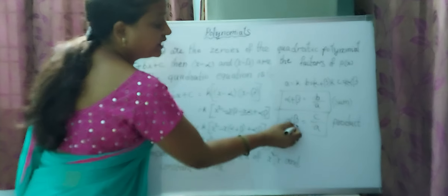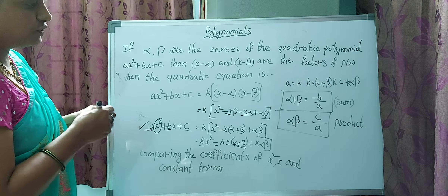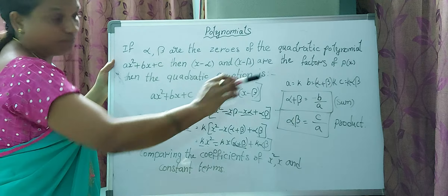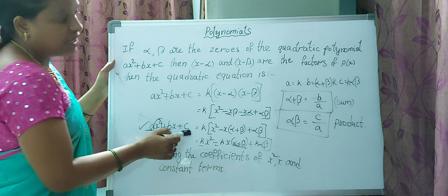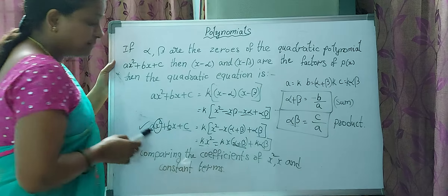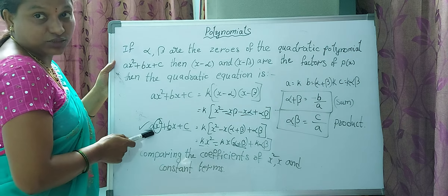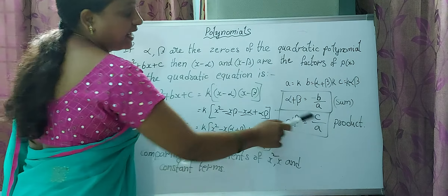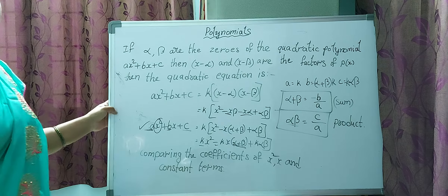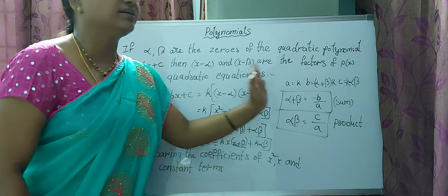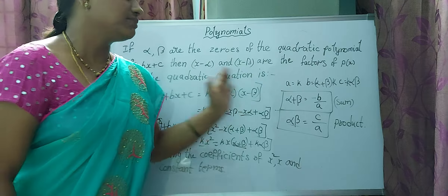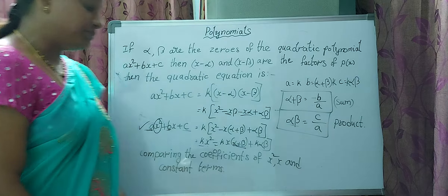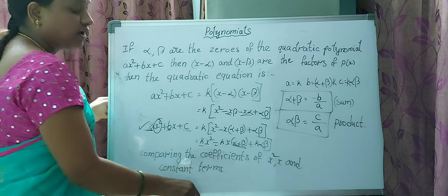The product of zeros, alpha·beta, equals the constant term divided by the coefficient of x², which is c/a. So instead of writing the full form each time, just remember: sum = -b/a and product = c/a.